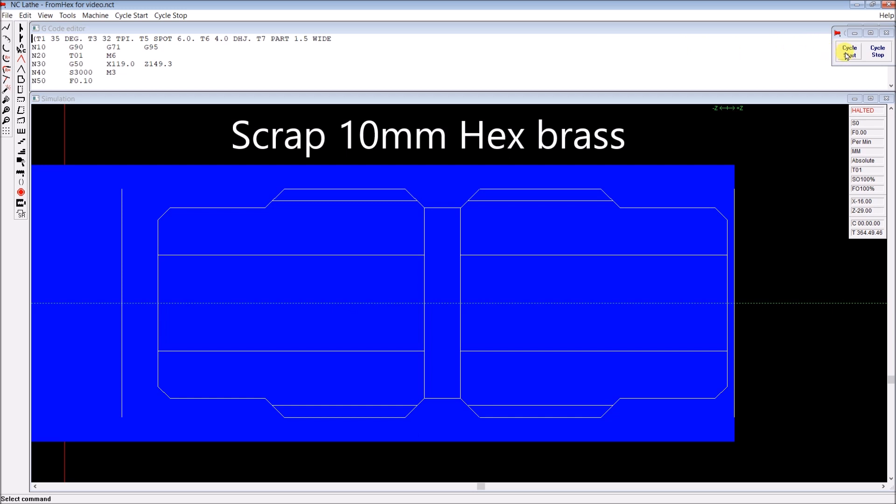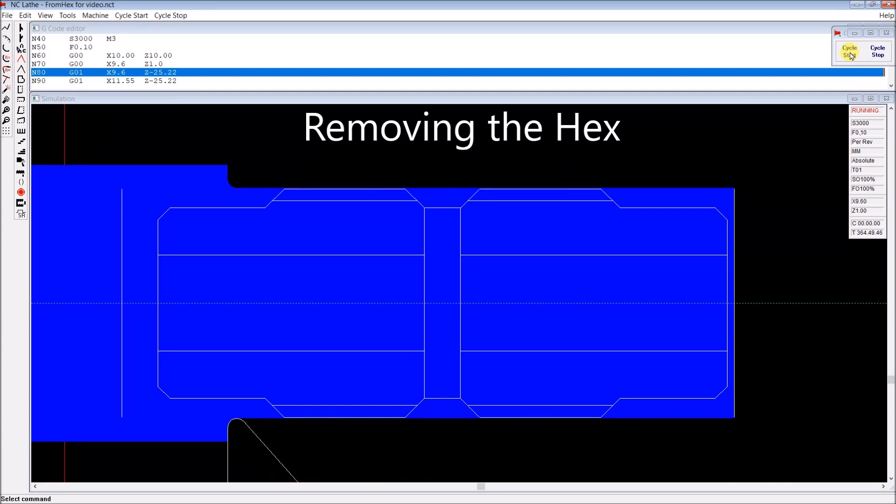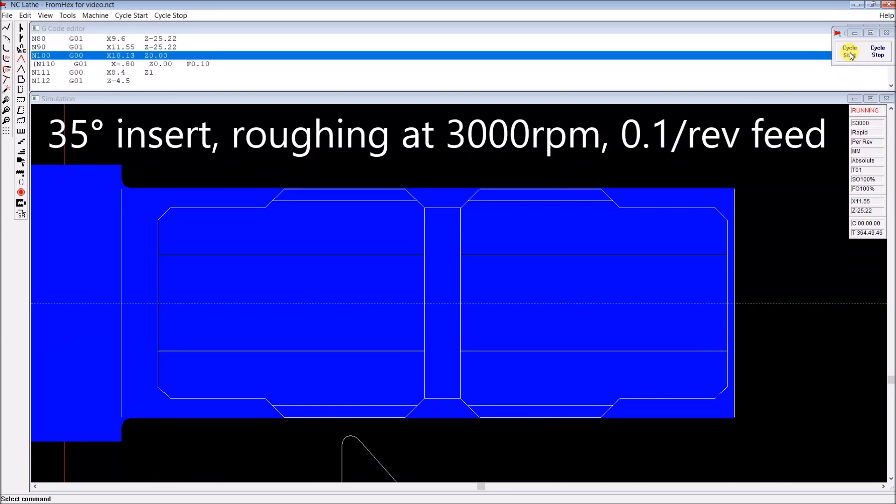In this video I'm showing one step of the simulation and then following it with the same step of actual machining. Here we're just removing the hex so we've got a nice round bar to cut a thread on.